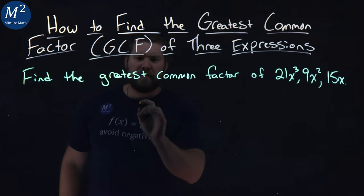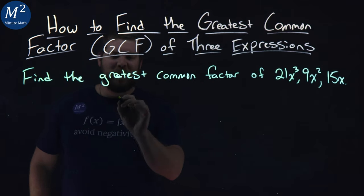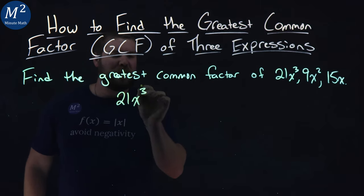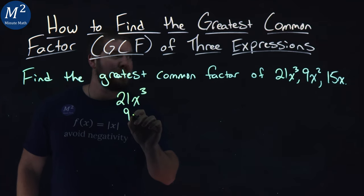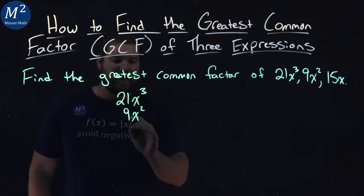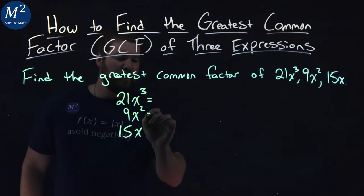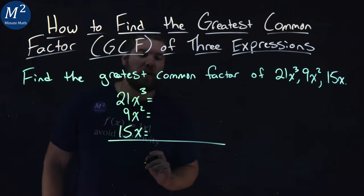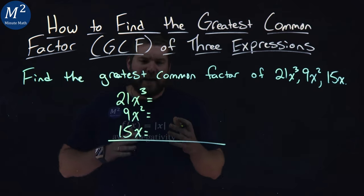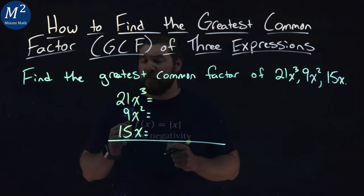Let's first write each one of these expressions down. 21x to the third, underneath it I'll put 9x squared, and lastly we have 15x. What I'm going to do is rewrite each one of these in prime factorization form.